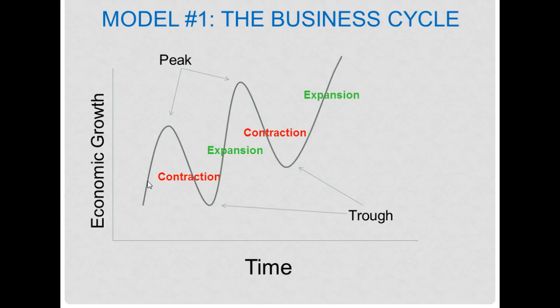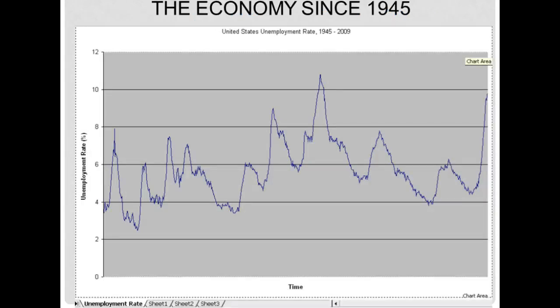To show you that's really true, let's take a look at a real-life example. The best data I can think of is the unemployment rate — essentially, the percentage of Americans who want a job but can't find one. This is actually the opposite of the business cycle: when unemployment is high, economic growth tends to be low, and vice versa. This is the unemployment rate since 1945, and you can see very clearly this thing goes up and down and up and down with a pretty good amount of regularity.